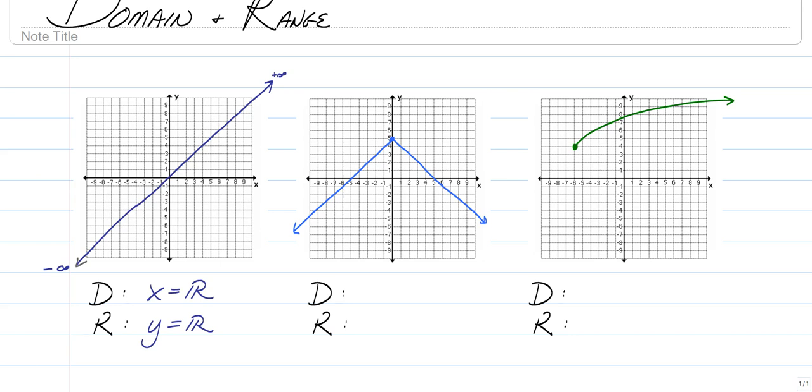Now the next example is going to be a little bit trickier. Because to think about domain, we look left and right again. Does it go left forever? Yes. Does it go right forever? Yes. Every single number imaginable is covered by this graph.